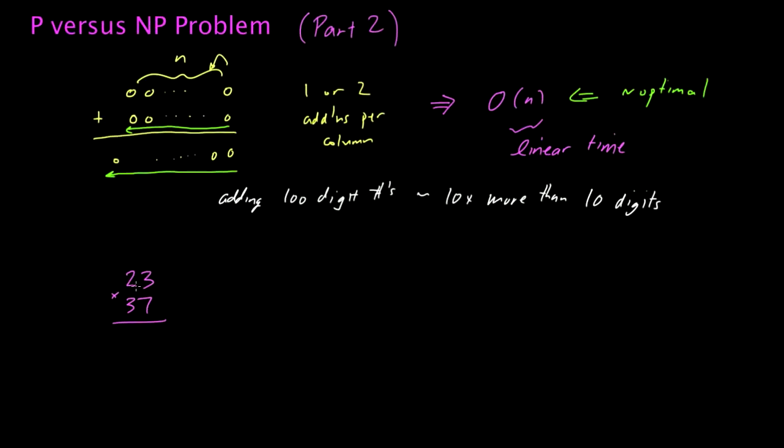In that case, the way you would do it is you would do a bunch of cross-multiplications. I would do 7 times 3 to get 21, I would carry the 2. 7 times 2 is 14, and I add the 2 to get 16. So now I multiply the 7 effectively by 23.